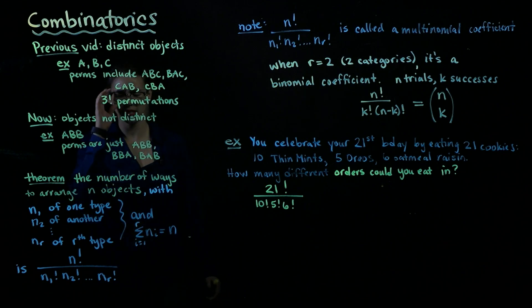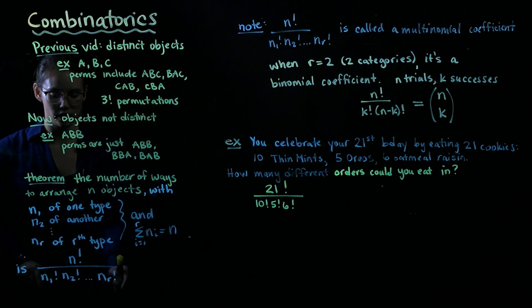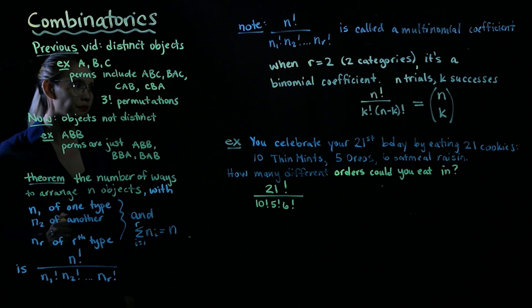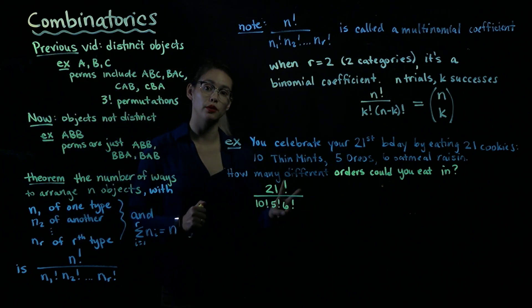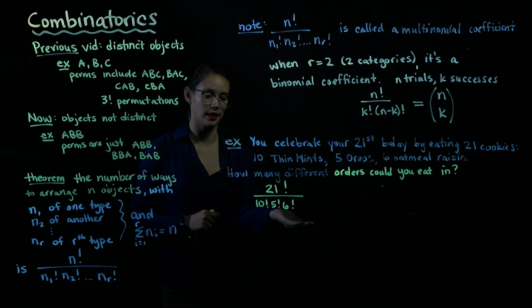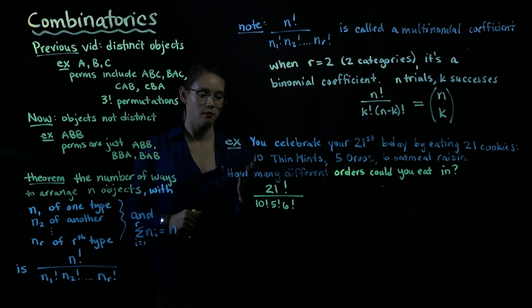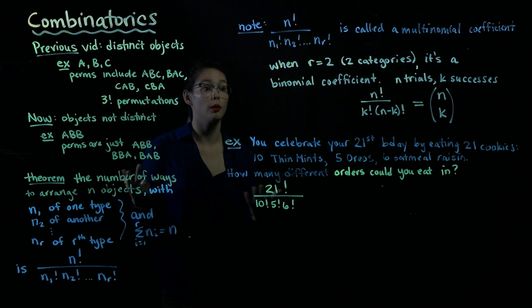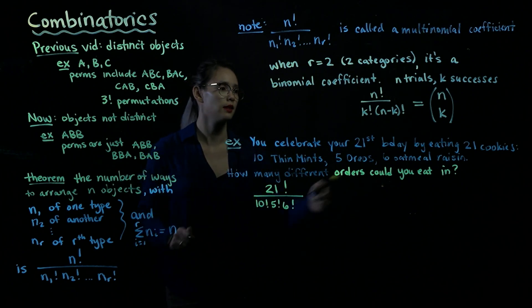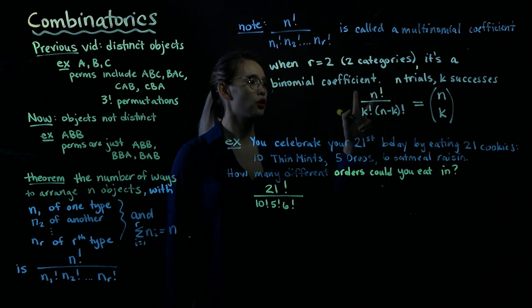So a couple notes about this. This quantity down here is called a multinomial coefficient. And when we just have two categories, such as successes, failures, heads, tails, pass, fail, then it's called a binomial coefficient.